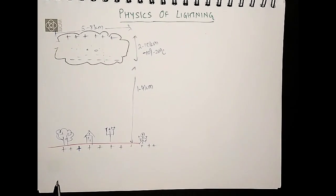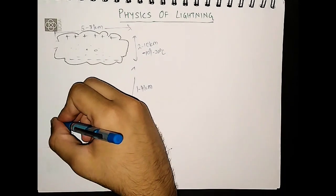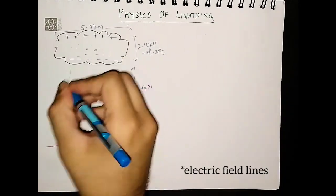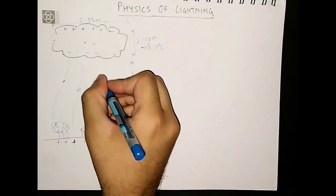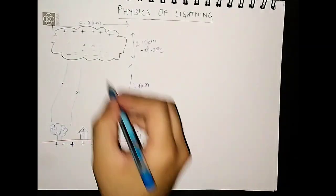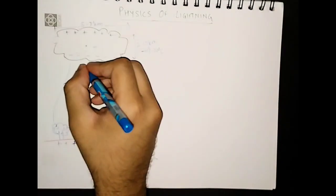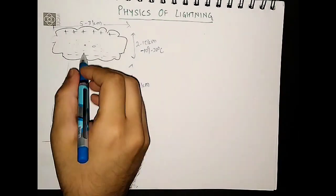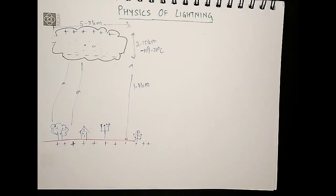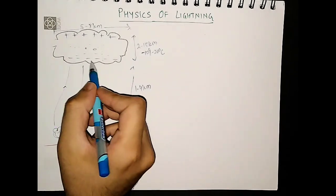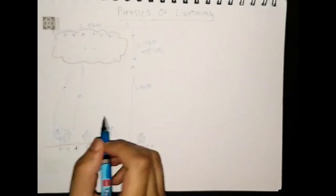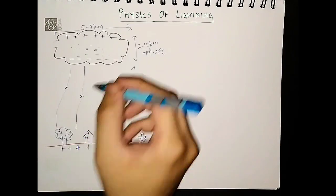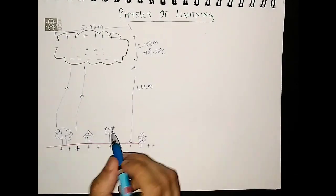So clearly, given this charge distribution, we would expect electric field lines going from the ground to the cloud in an upward fashion — going from positive to negative. For a lightning to occur, how much charge should accumulate? The atmosphere is not a really good conductor of electricity, so we cannot have a current flowing from cloud to ground just like that. We need an electric breakdown of the atmosphere for a current to flow.